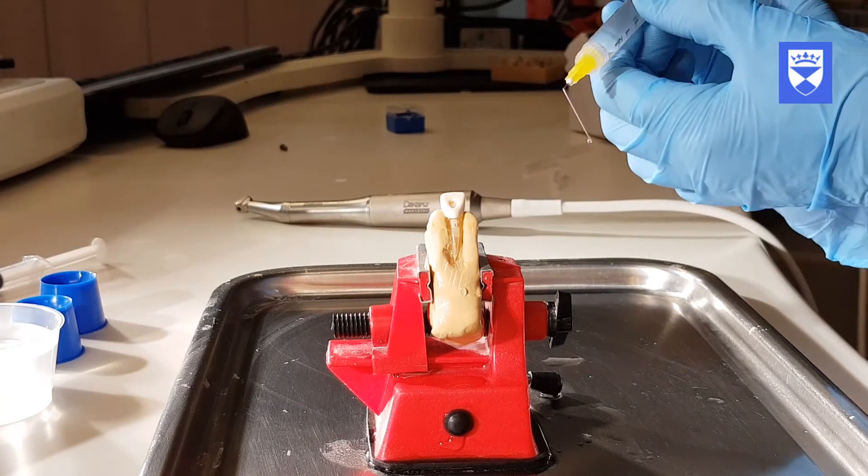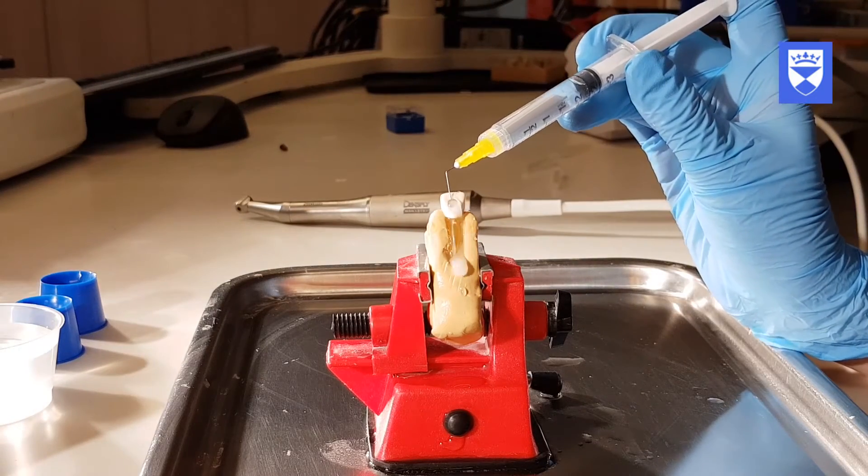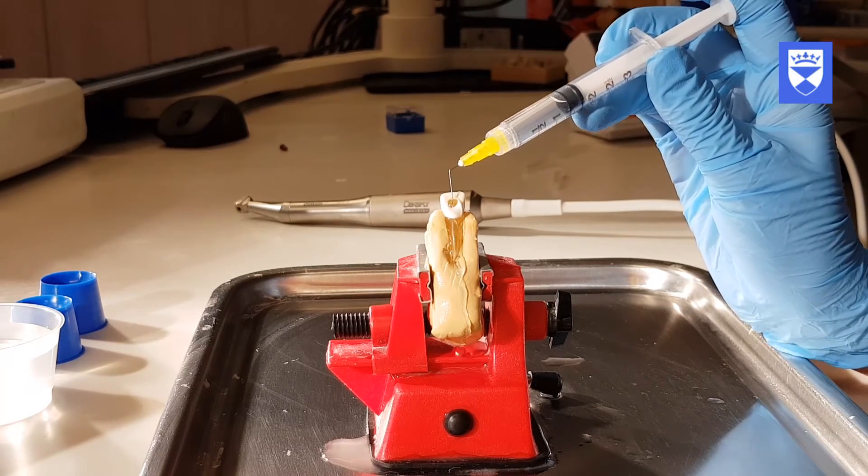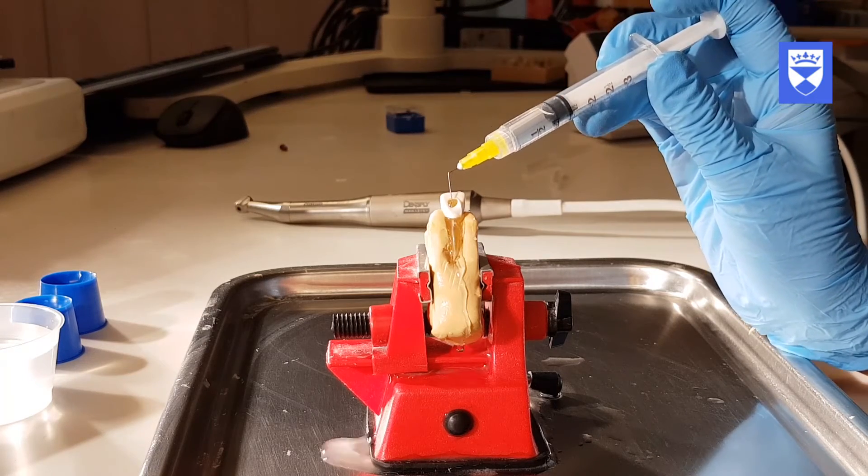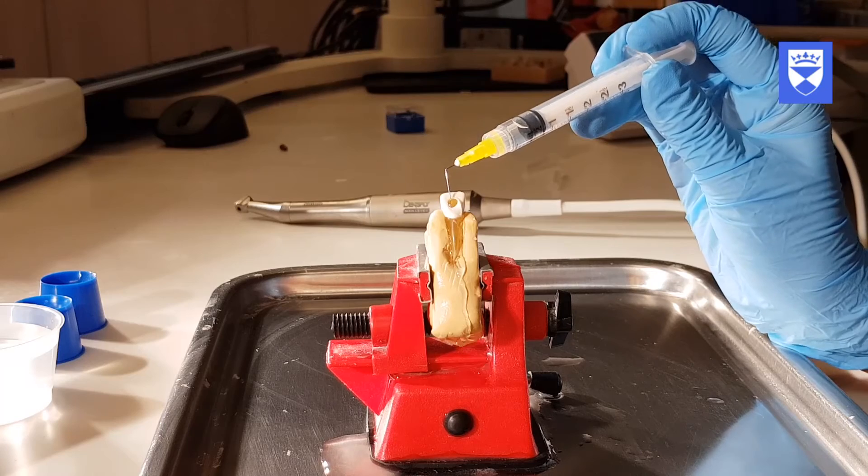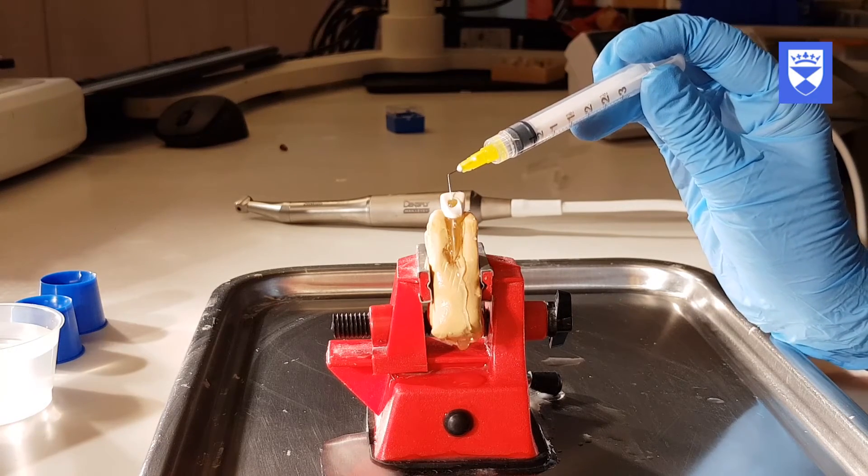Once the canal has been finished, the final irrigation should be completed. The final irrigation sequence is as follows: 3ml sodium hypochlorite solution, followed by 3ml citric acid solution, and a final 3ml sodium hypochlorite solution.